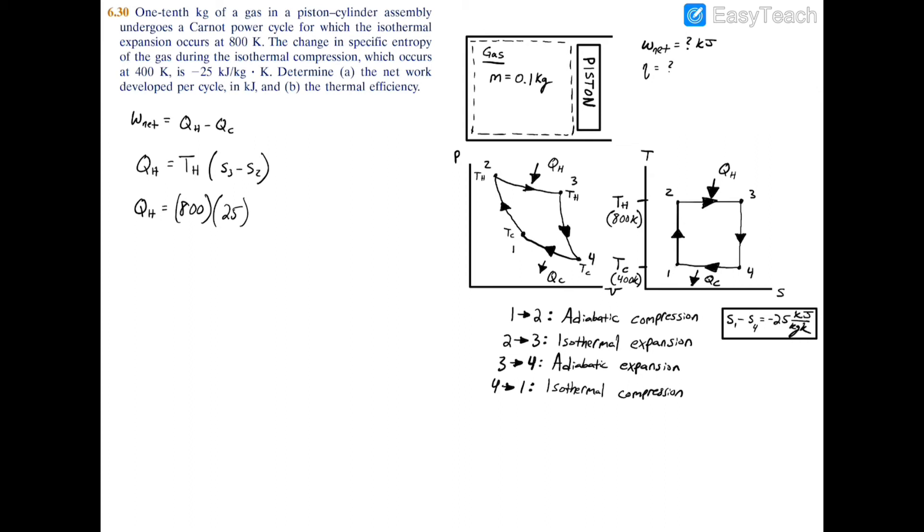We need to multiply by the mass, so multiplying by m = 0.1 kg gives us kilojoules. Plugging this into the calculator, Q_hot = 2000 kJ.